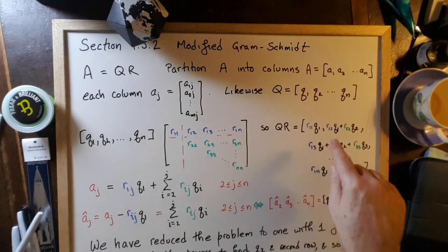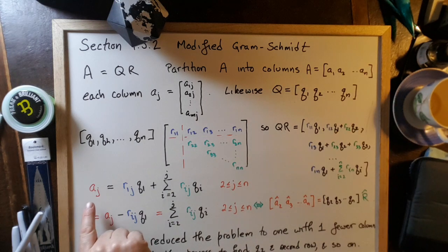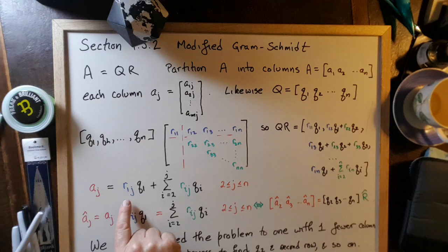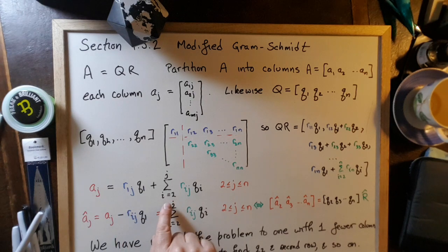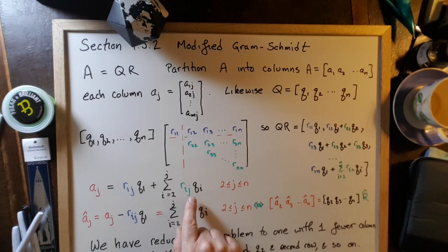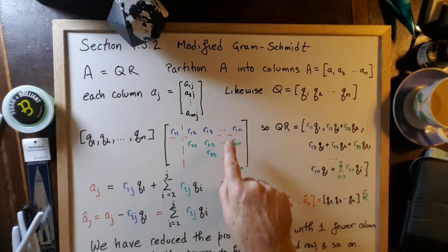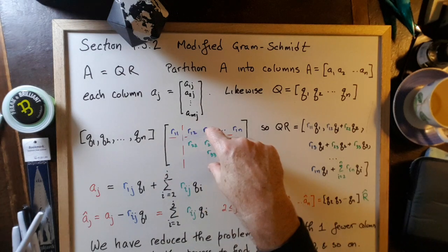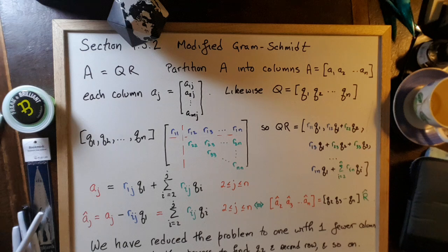We did that by comparing the columns in the product to the original columns. So we wound up with the original columns equal to R1J times Q1 plus the sum from I equals 2 of RIJ times QI. So that's interpreting this product as a linear combination of these columns gives us the corresponding column of the product.